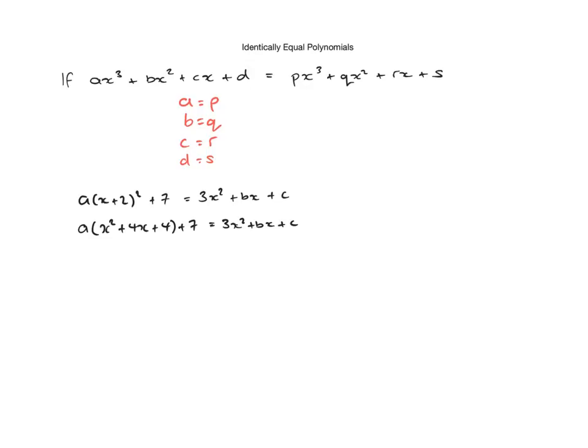Still haven't finished. Just completely multiply out this bracket now. So we get ax² + 4ax + 4a + 7 is equal to 3x² + bx + c.